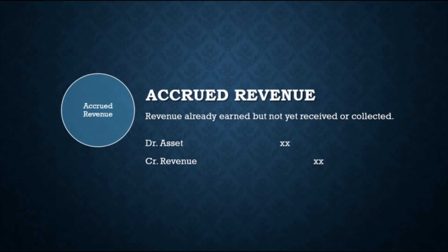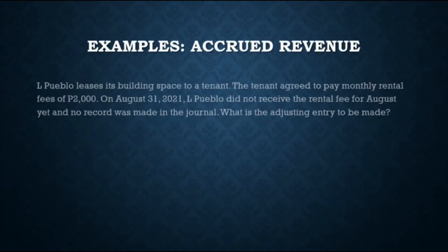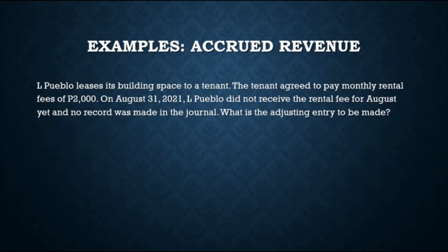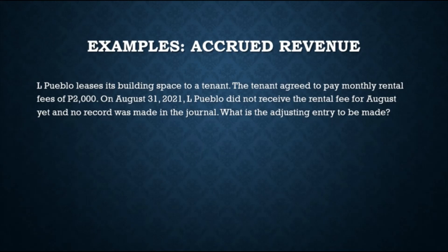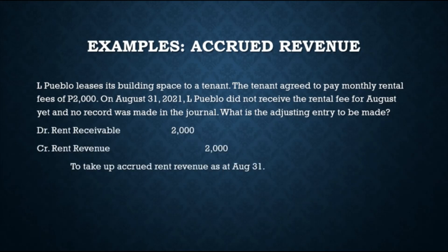First example for accrued revenue: El Pueblo leases its billing space to a tenant who agreed to pay monthly rental fees of 2,000. On August 31, 2021, El Pueblo had not yet received the rental fee for August and no record was made. Under accrual basis, rent income should be recognized since it has been earned even if not yet collected. Since the asset and revenue are understated, we debit receivable and credit revenue. The adjusting entry is: debit Rent Receivable 2,000 and credit Rent Revenue 2,000, to take up the accrued rent revenue as at August 31.